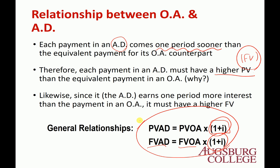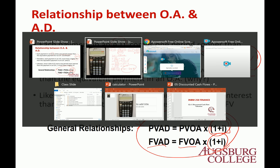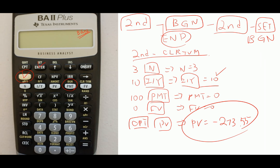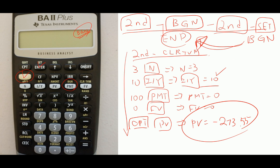There's another way to compute Annuity Due problems without changing the mode of the calculator. Previously we converted the mode, but you need to remember to change it back to end mode afterward by pressing second BGN, then second SET again, so it doesn't keep assuming cash flows occur at the beginning of the period for other problems.